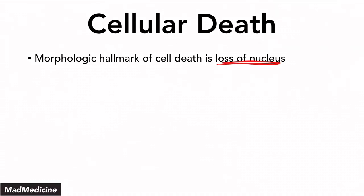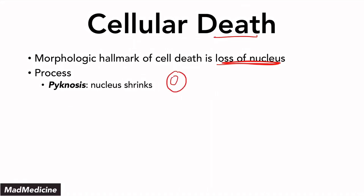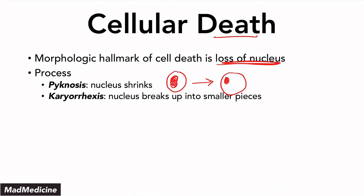When a cell loses its nucleus, you know that cell has died because the nucleus is where everything is going on. The process of nuclear loss begins with pyknosis. In pyknosis, a normal cell's nucleus is essentially going to shrink — that is what is happening. You can see how the nucleus goes from large to noticeably smaller.